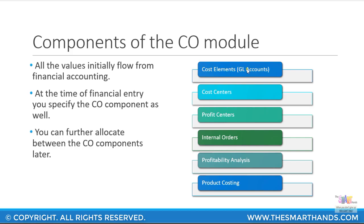You may be familiar with general ledger accounts if you come from a financial background — these are your chart of accounts. In CO, your expense accounts and revenue accounts are created as cost elements. CO is concerned with the income statement, so income statement chart of accounts are created as cost elements and reporting is done at that level. Cost centers represent your departments or divisions, while profit centers represent business units that generate both revenue and expenses, so you can see the overall profit.